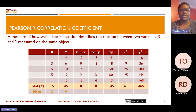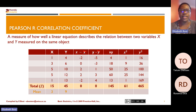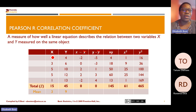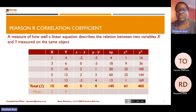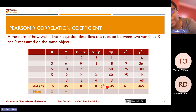For Y, we add up all the Y values and get 45, divide 45 by 5 to get a mean of Y equal to 9. So 4 minus 9 is minus 5, 6 minus 9 is minus 3, 10 minus 9 is 1, and so on. To calculate XY, we say 1 times 4 equals 4, 3 times 6 equals 18, 5 times 10 equals 50, 5 times 12 equals 60, and 1 times 13 equals 13. When we add all those values, they give us the summation of XY.